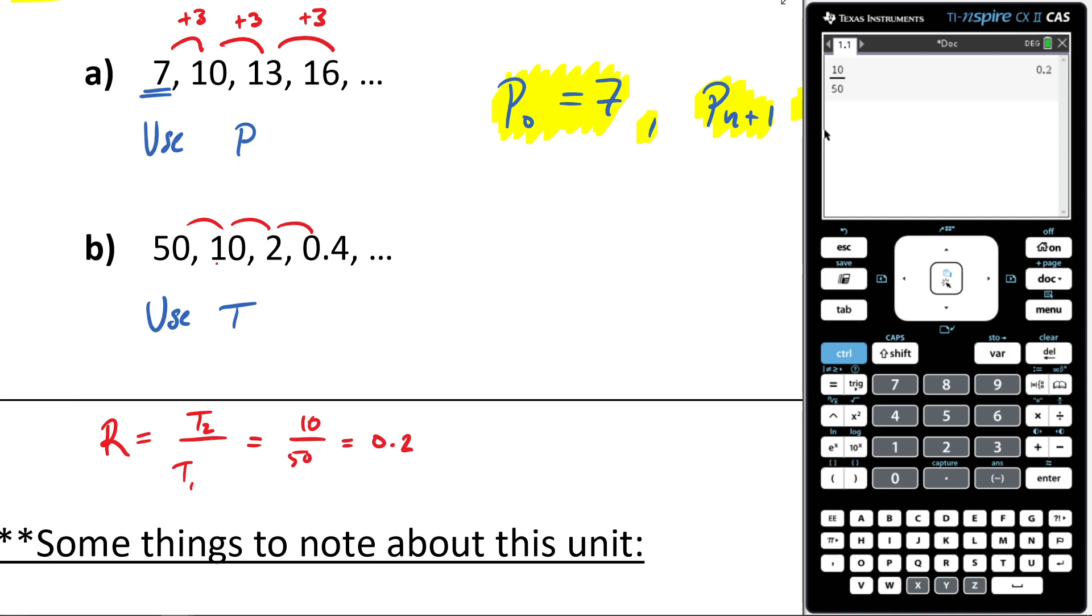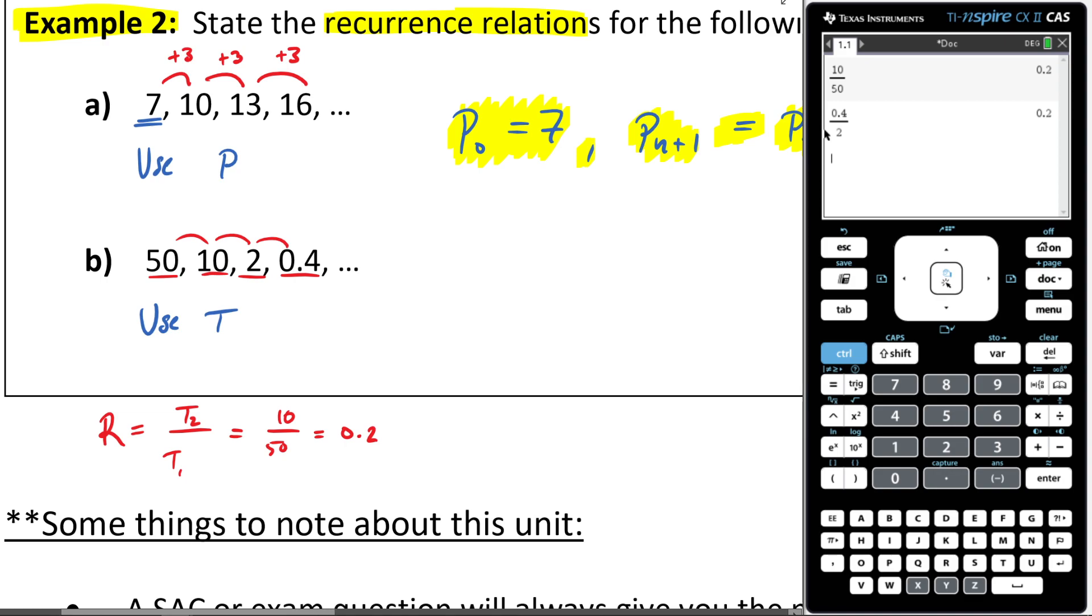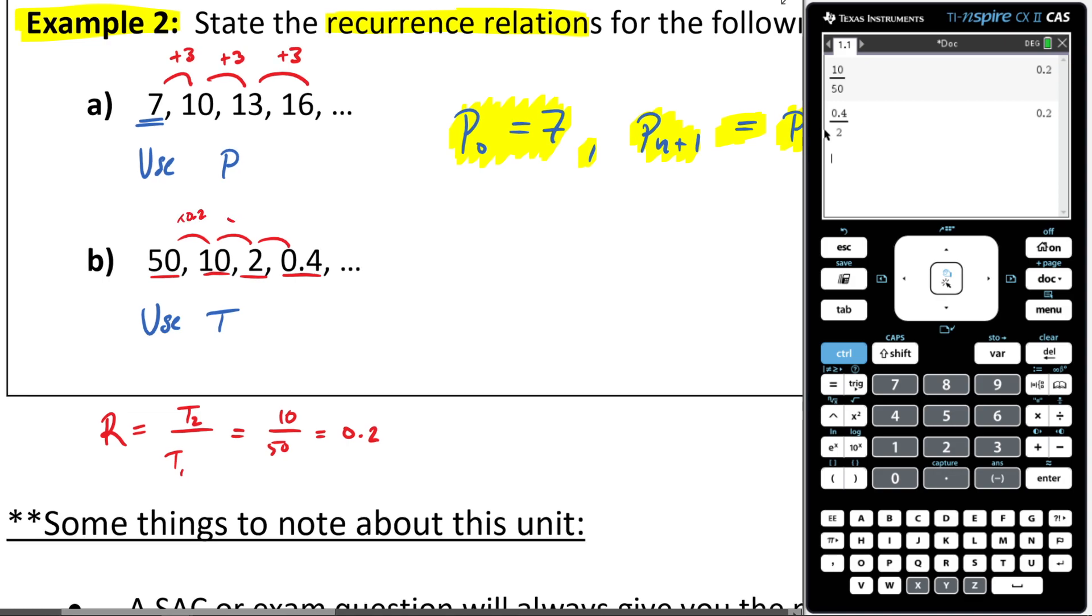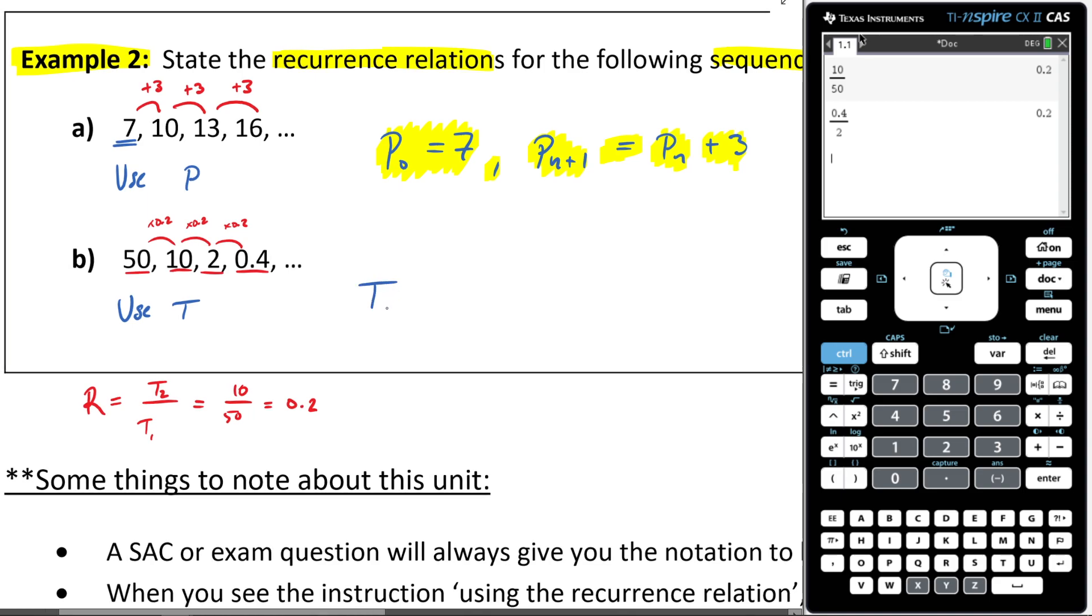Remember, it didn't necessarily have to be the second and first. It could have been like the fourth and third. If I went 0.4 and divided it by two, I'm also going to get 0.2. So just something to keep in mind there. All right, having now figured that out and realizing that we're clearly timesing it by 0.2 each time, let's now write our recursion relation. Remembering we're using the letter T here. I'm gonna go, it's T of 0 is equal to, my initial one is 50. So I'm gonna say 50.